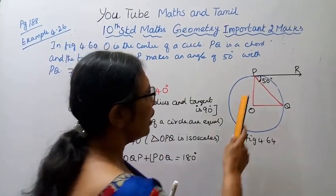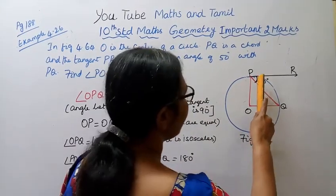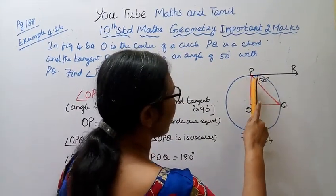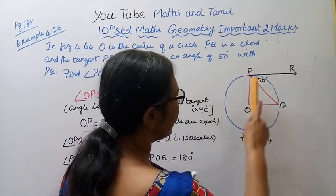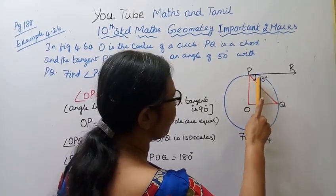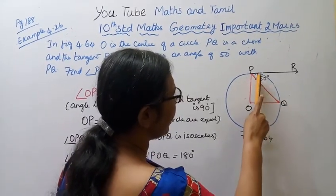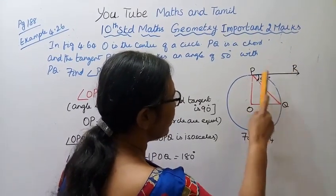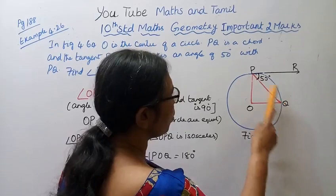The easy way to do this: the angle between the radius and the tangent is 90 degrees.